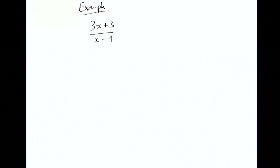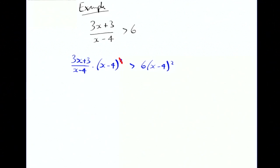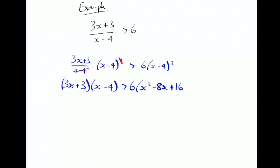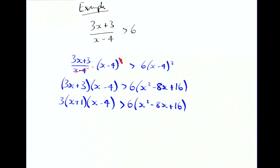Let's have a look at another one of these algebraic rational expressions. We'll look at 3x plus 3 all over x minus 4 is greater than 6. We guarantee we're multiplying through by a positive by multiplying by the denominator squared. So that's 3x plus 3 over x minus 4, multiplied by x minus 4 squared. One of them cancels, giving 3x plus 3 times x minus 4 is greater than 6 lots of x squared minus 8x plus 16. Noticing that 3x plus 3 has a factor of 3, we get 3 lots of x plus 1 times x minus 4 is greater than 6 lots of x squared minus 8x plus 16.